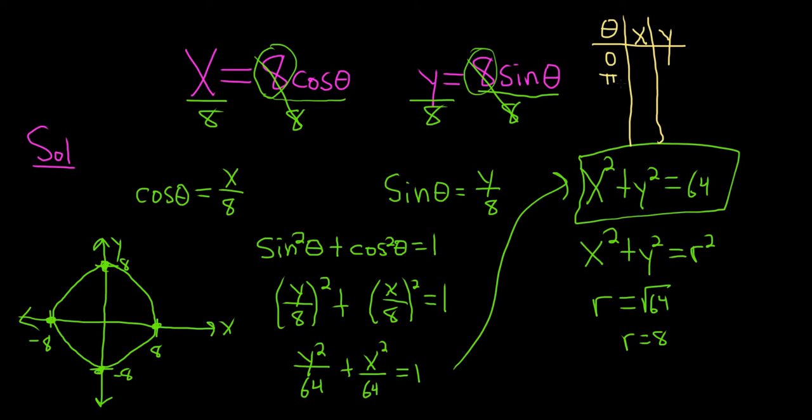And the trick is to plot values in increasing values of theta. So we can pick nice numbers like 0 and pi over 2. So if you plug in 0 for x, you get 8 times the cosine of 0. The cosine of 0 is 1, so you just get 8 times 1, so you just get 8.